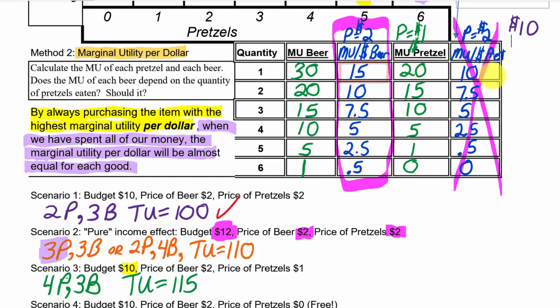We should buy the pretzel first - 20 happiness per dollar for $1. Now we have $9 left. What next? We could buy a pretzel for 15 happiness per dollar or the first beer for 15 happiness per dollar. Buy both if we can afford them - yes we can. One $2 beer and one $1 pretzel costs $3, leaving us with $6.